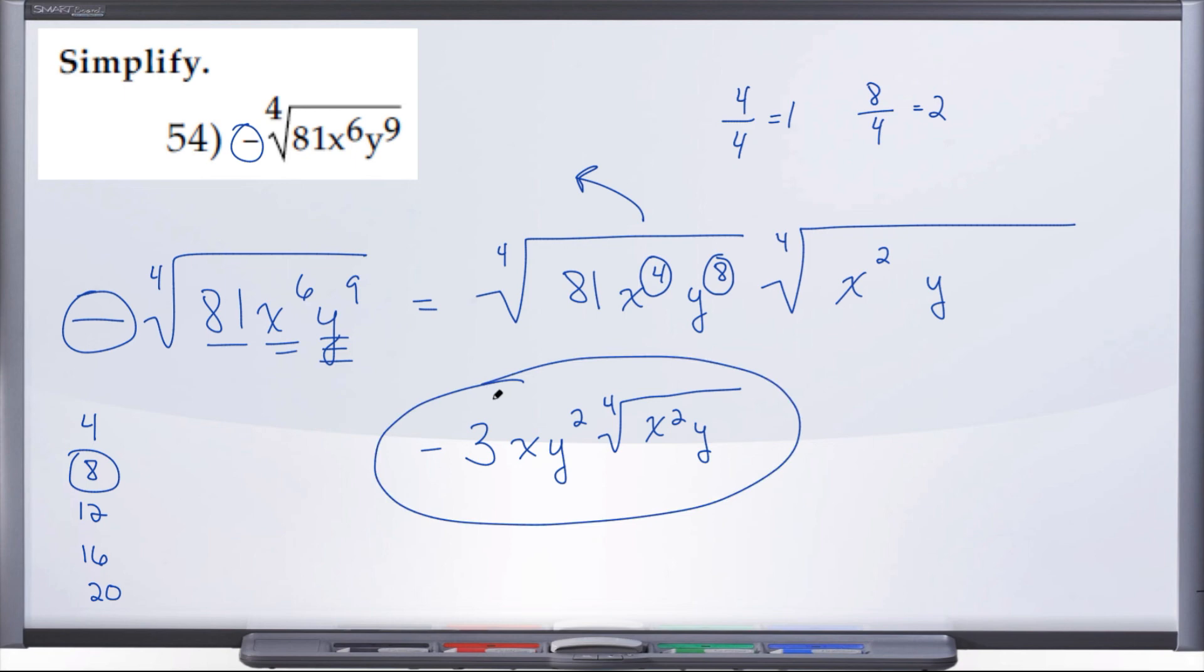And we end up with negative 3xy squared times the fourth root of x squared y. And there we have it, number 54.